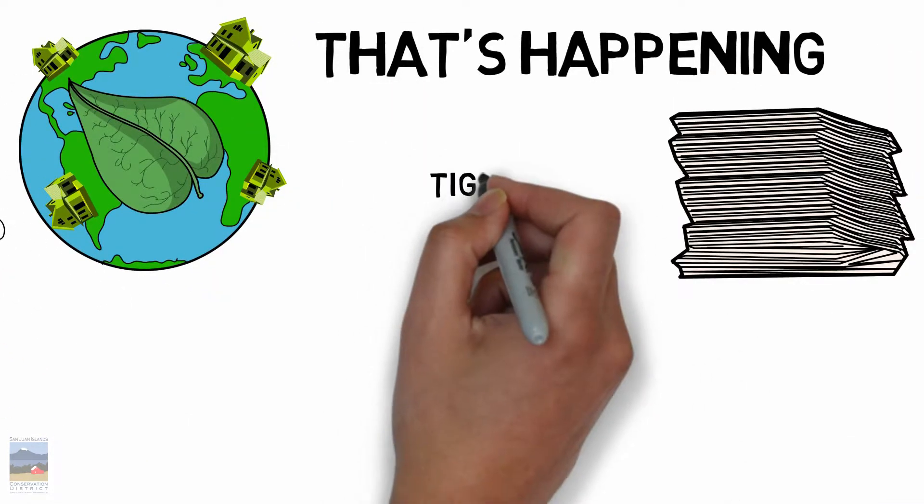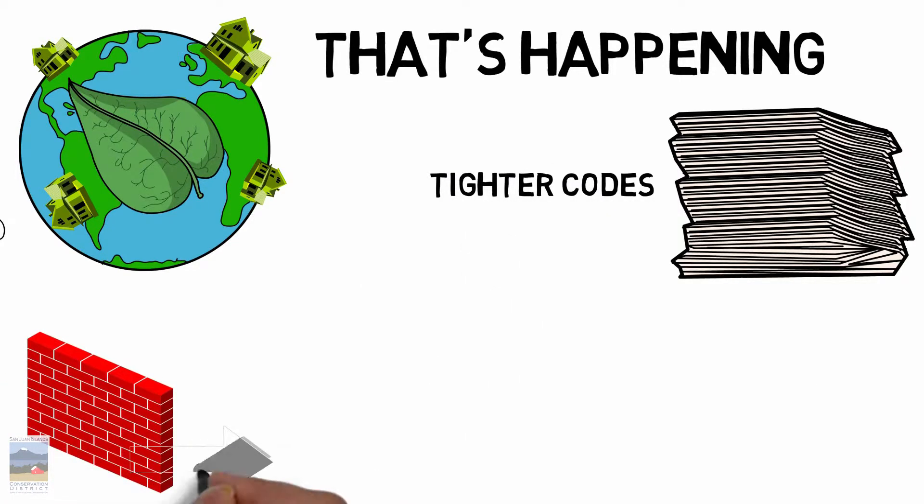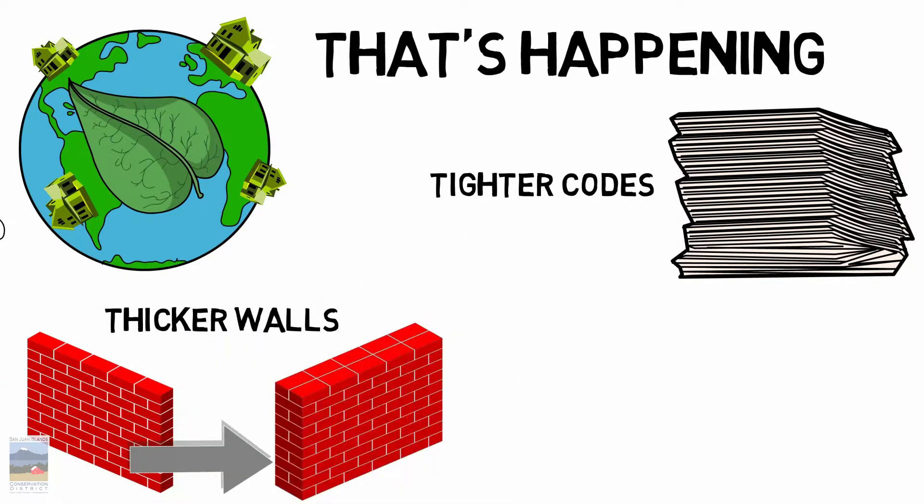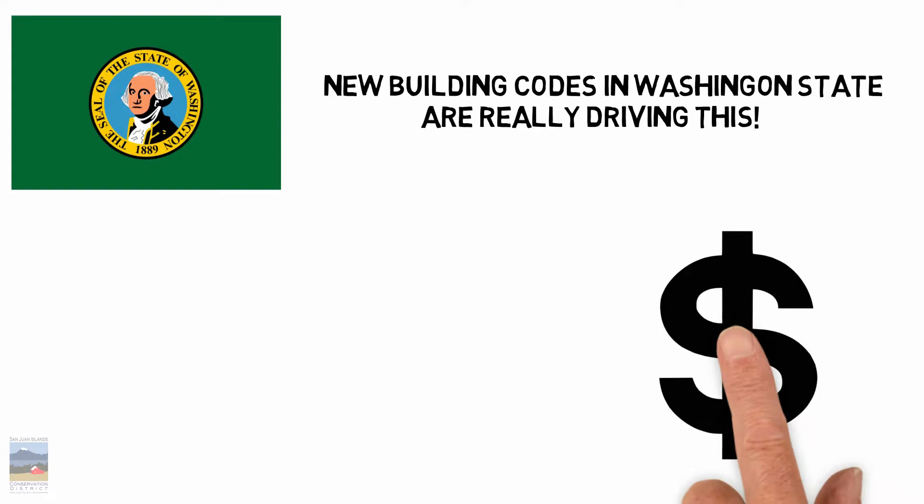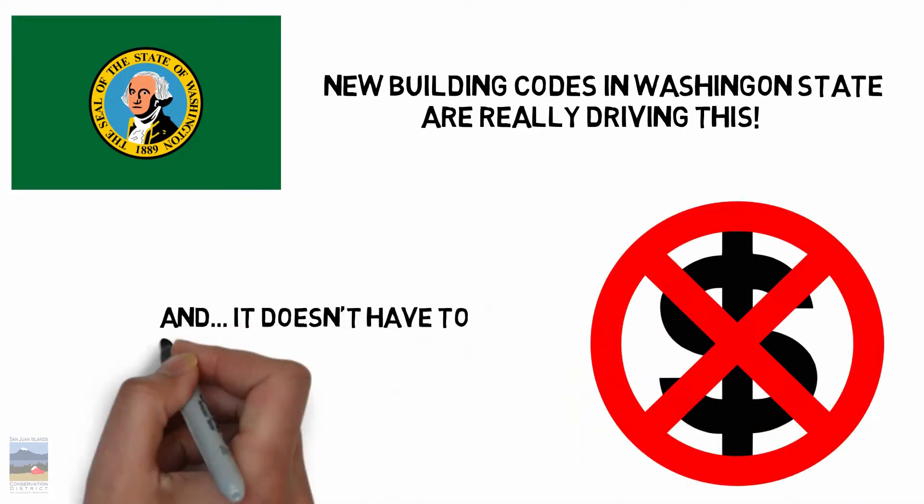The codes have gotten tighter and tighter and walls are getting thicker and heating systems more efficient and so on to the point where now, especially in Washington state, the codes are really driving a lot of this. So it's great. And it doesn't have to be a lot more expensive, which is what's nice.